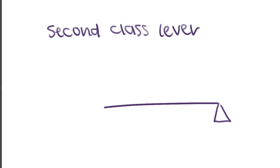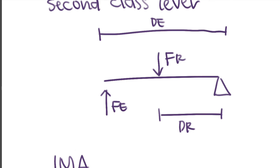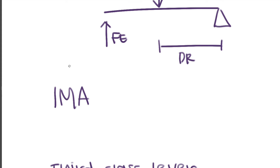The second class lever has the fulcrum at one end of the lever, the resistance force in the middle, and the effort force at the far end. DE spans the entire length of the lever to the effort force, and DR goes from the fulcrum to the resistance force. Since DE will always be greater than DR, using IMA = DE over DR, the IMA for a second class lever will always be greater than one.